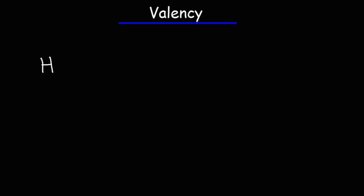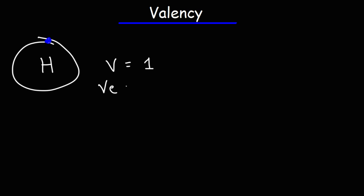Let's consider the first element, hydrogen. Hydrogen has one valence electron. And depending on what other element it binds to, it can either accept another electron or it can give away this electron. Either case, its valency is one — it can either accept one electron or give away that electron. The number of valence electrons that it has is one.